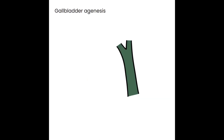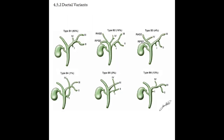Gallbladder agenesis occurs when the gallbladder fails to form entirely. As for ductal variants, many occur — usually on the intrahepatic ductal side — but due to the normally very small size of the ducts, changes in the ductal system are not well appreciated by ultrasound.